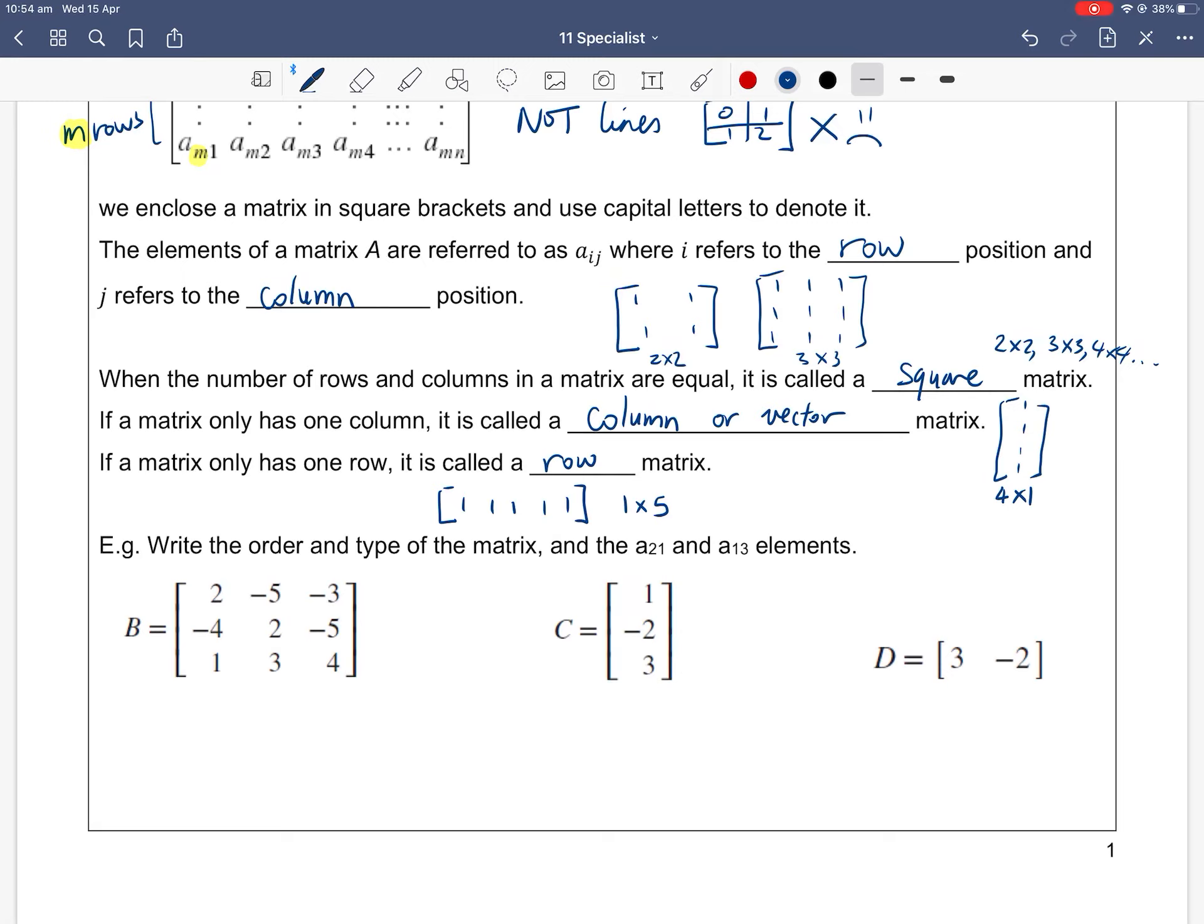Here's a little mini example to consolidate what we've talked about. We have 3 matrices—B, C, and D. Notice they are labeled by capital letters. We label the matrix with capital letters. The elements inside, we call them by their lowercase letters. We need to write the order, the row by column, and the type—is it a square matrix, a column matrix, or a row matrix? And we need to label A21, meaning that's the second row, first column entry. And A13 means the first row, third column entry. Remember, rows, then columns. Let's do B first.